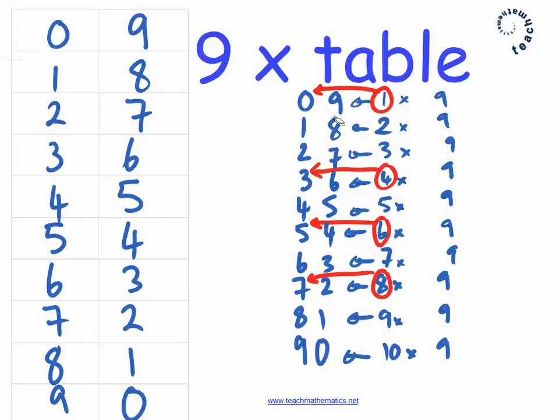So you might notice that all of these pairs of numbers, 0 and 9, 0 plus 9 is 9, add up to 9. 0 plus 9 equals 9. 1 plus 8 is also equal to 9. 2 plus 7 equals 9.